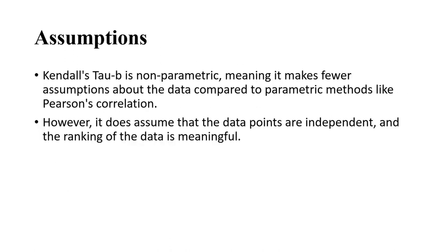The assumptions of Tau B are that the data are non-parametric, meaning it makes fewer assumptions about data compared to parametric methods like Pearson's correlation. However, it does assume that the data points are independent and that the ranking of the data is meaningful.